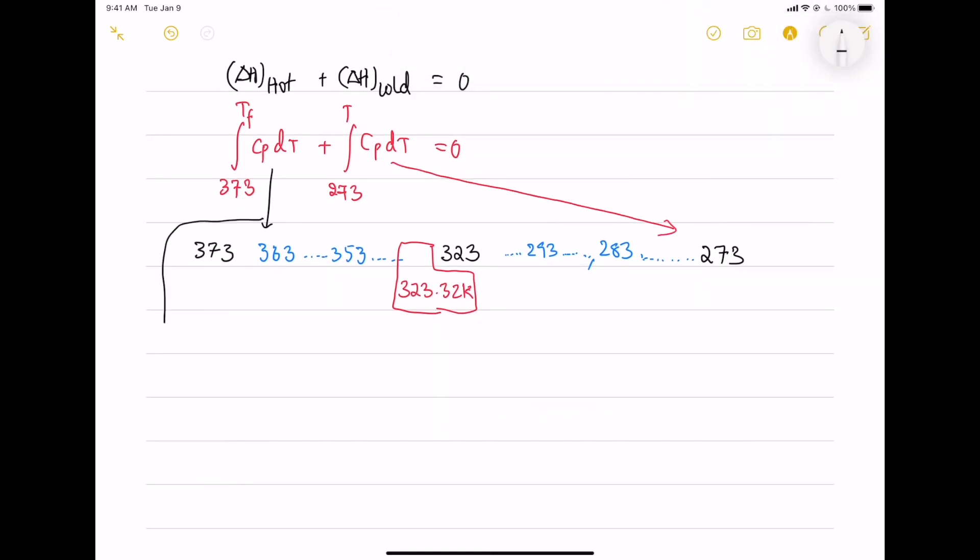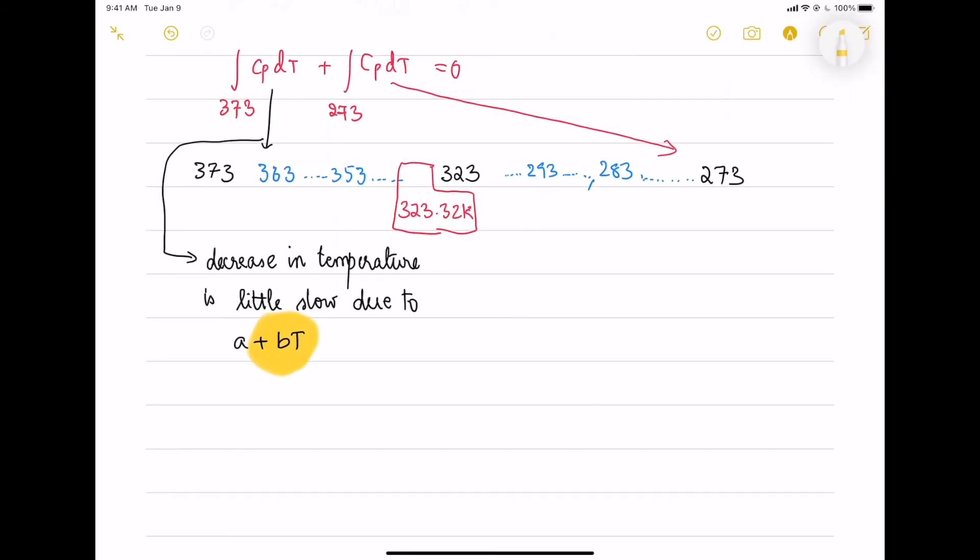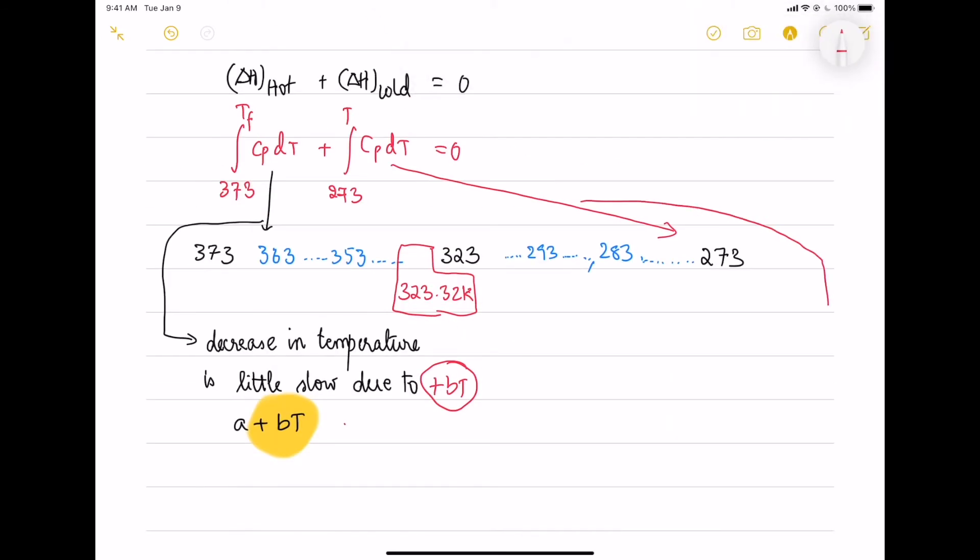Here the hot, the temperature decreases, the decrease in temperature is little slow due to A plus B term. I will highlight the B T term. Due to the plus B T term, the decrease in temperature is slower. And here the increase in temperature is a little fast due to the plus B T term.